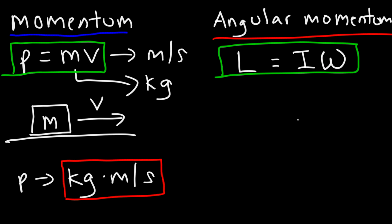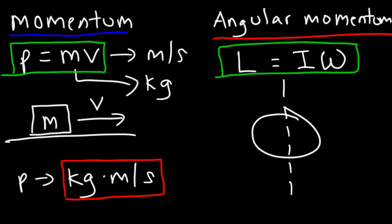So if you have an object that is rotating on its axis, you have the inertia of the object, which can vary based on the shape of the object, and then how fast it's spinning would tell you its angular velocity.